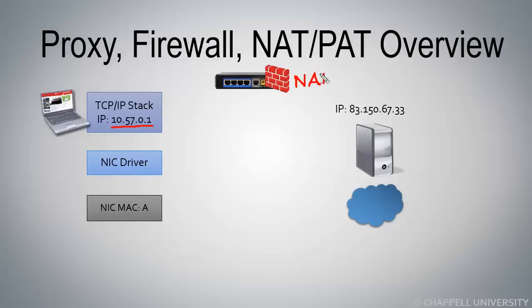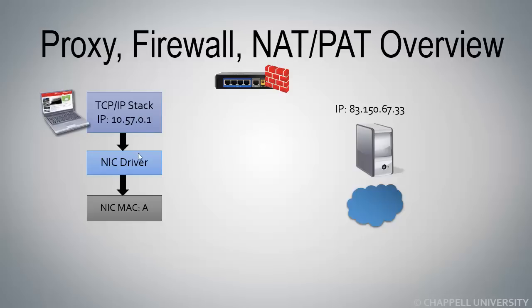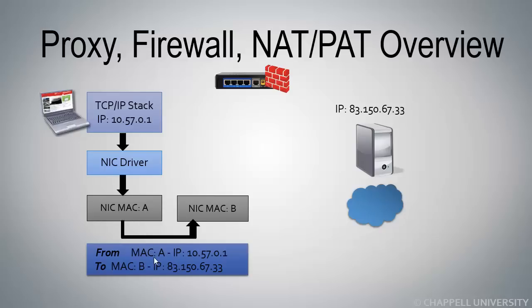We don't want to use our inside address out on the internet. So this client will be sending the traffic to IP address 83.150.67.33 out on the internet. The traffic will flow down through the TCP/IP stack, the network interface driver, and then the network interface card itself. This client has MAC address A, and the traffic will be sent from MAC address A to MAC address B, which is the MAC address of the router on the inside network. The destination IP address will be the final target out on the internet.